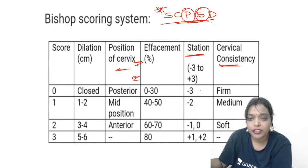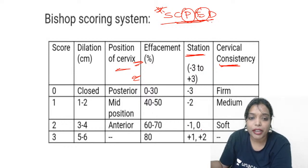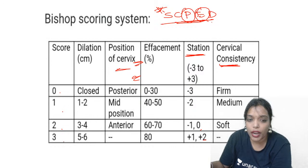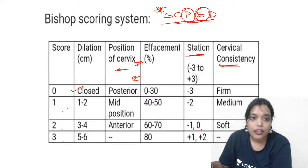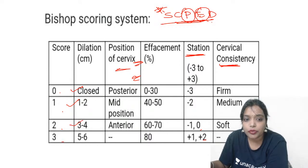For station: minus 3 is very high up, so it gets a score of 0; minus 2 gets score 1; minus 1 to 0 gets score 2; and plus 1 and plus 2 gives a score of 3. The scoring system goes 0, 1, 2, and 3. For dilatation: if closed, score 0; 1 to 2 cm, score 1; 3 to 4 cm, score 2; 5 to 6 cm, score 3.